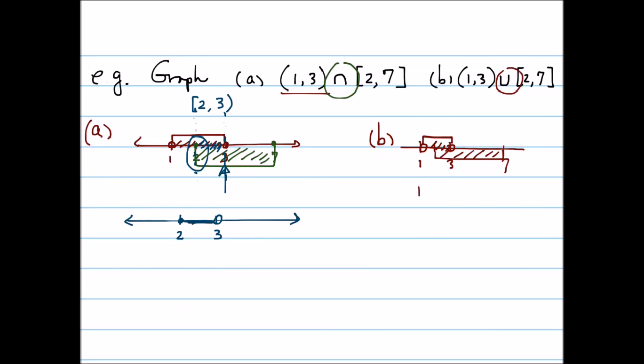1 is going to be open and 7 is going to be closed. And if you actually graph that, the solution there is just going to be open on the 1 and close on the 7, and it's everything in between.